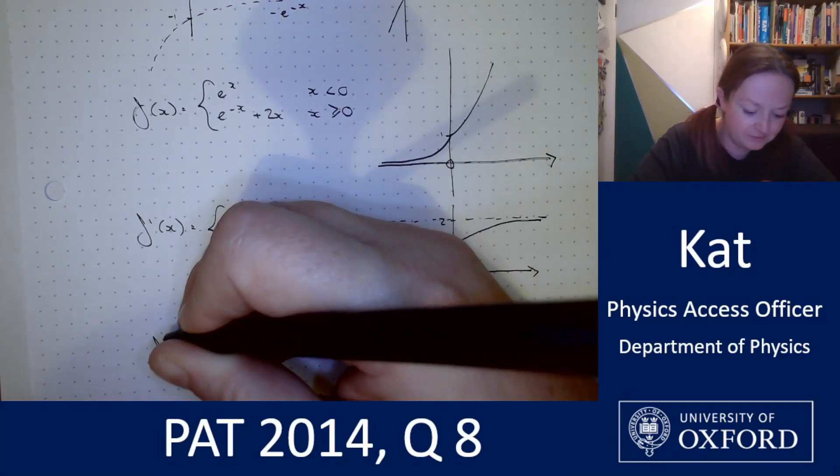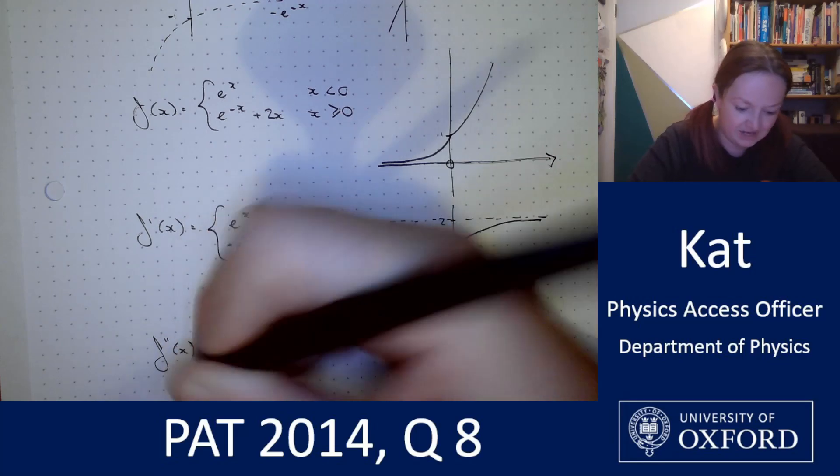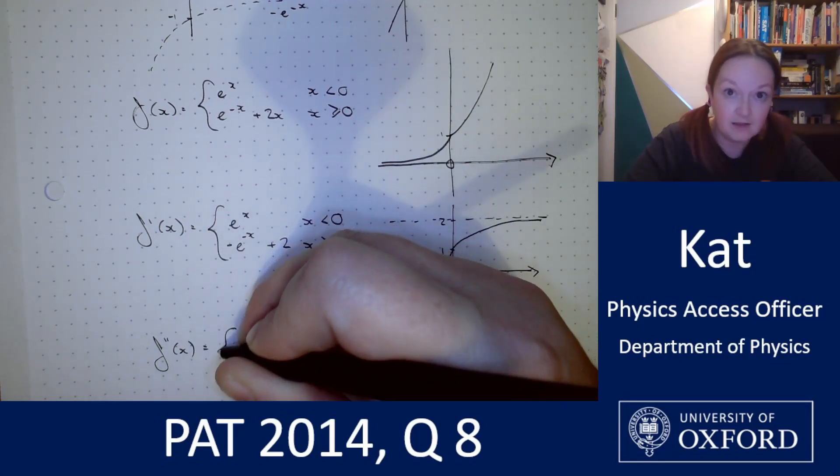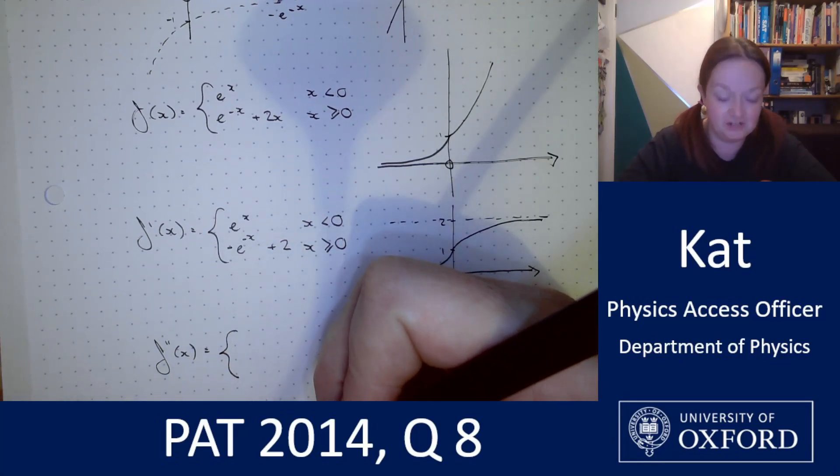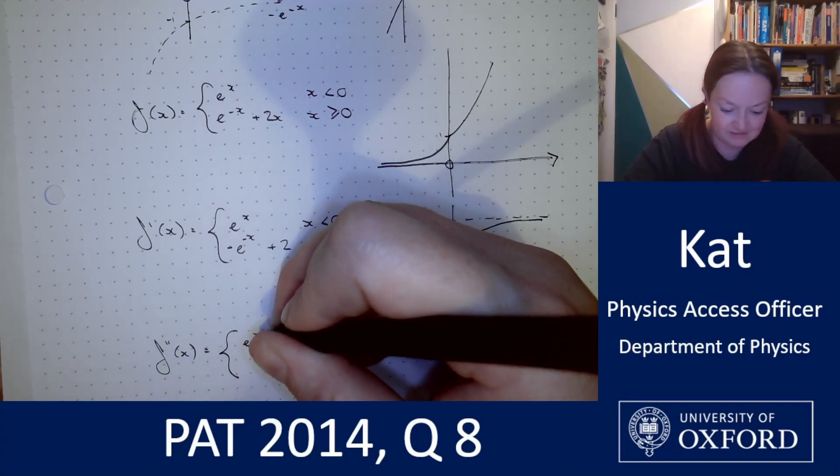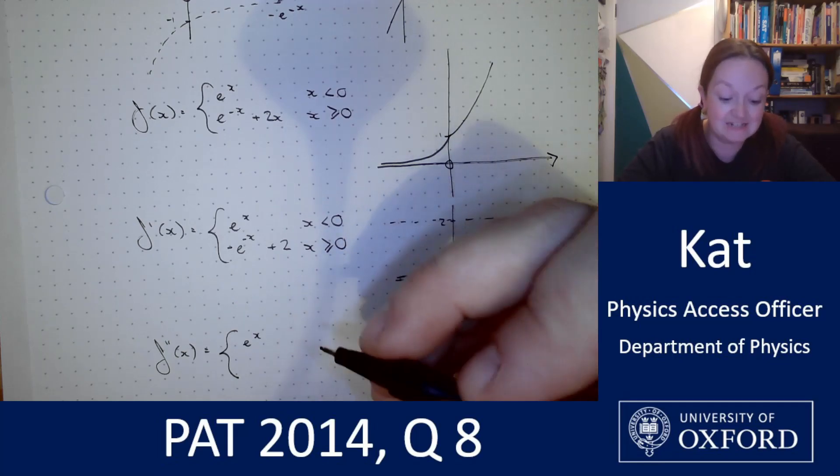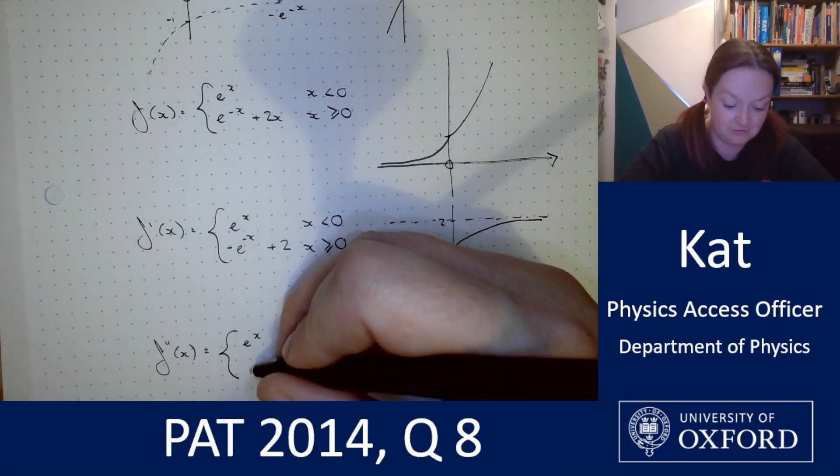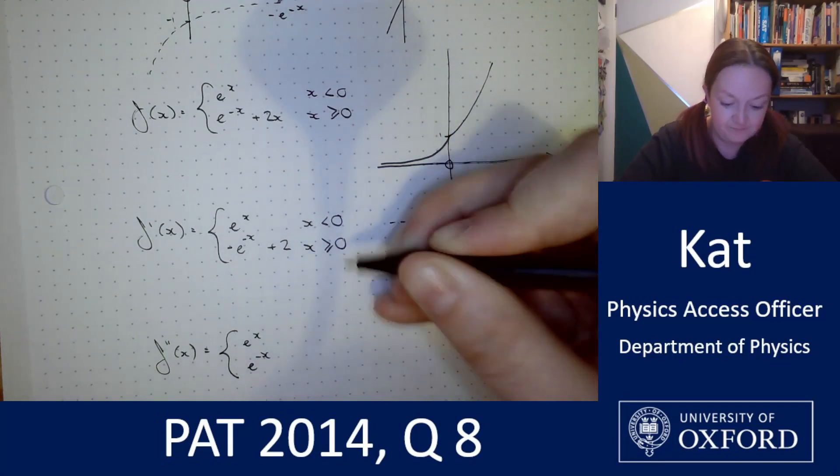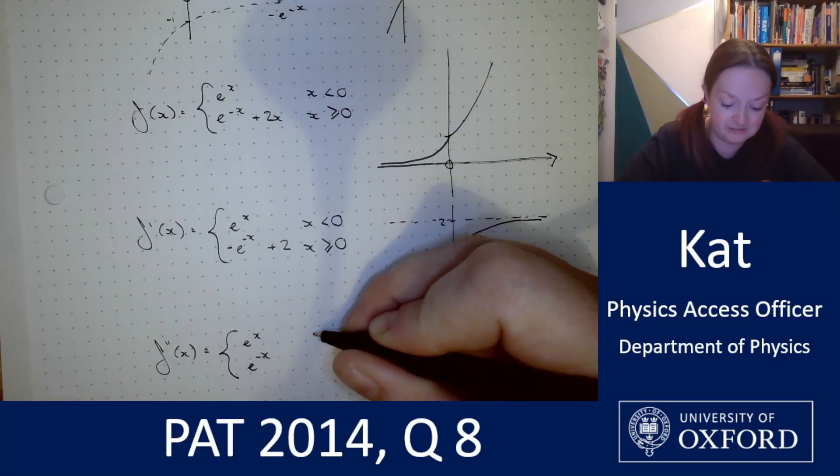Let's move on to our second derivative f double dash x. Again this is unchanged to start us off. e to the x is e to the x. The derivative of negative e to the negative x is positive e to the negative x. And this time our two disappears. This question gets easier as we come through.